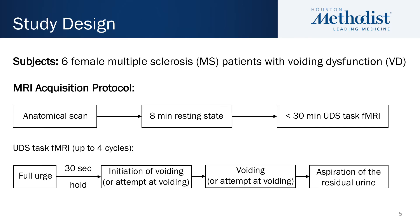In our study, so far we have analyzed 6 female MS patients with voiding dysfunction. After the anatomical MR scan, we performed an 8-minute resting state fMRI scan, and then a UDS task fMRI scan.